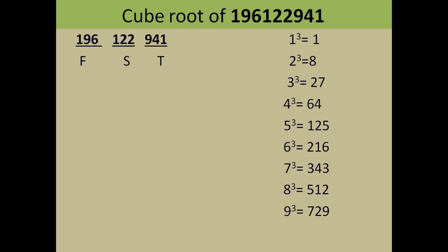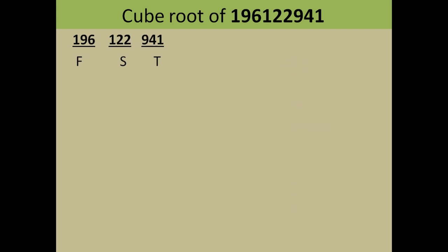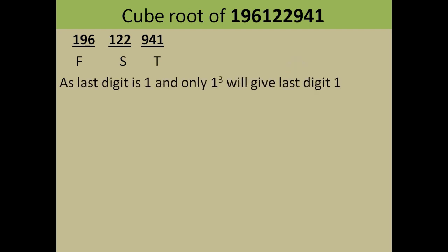First we find the last digit of the answer. To do this, look at the last digit of the number itself. The last digit of our number is 1. We check: only one cubed gives a last digit of 1. So the last digit of the cube root is automatically 1. Your third digit is 1.